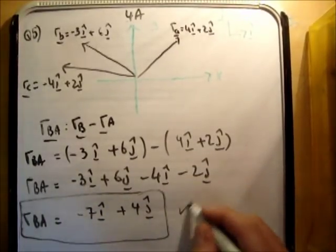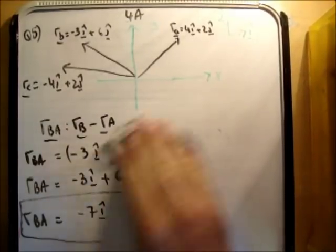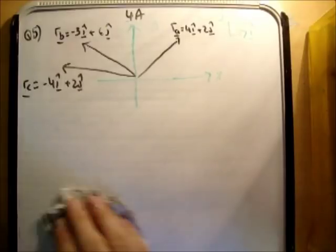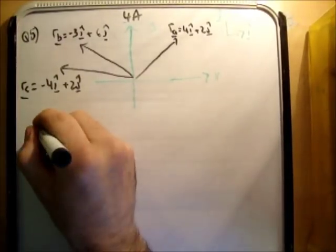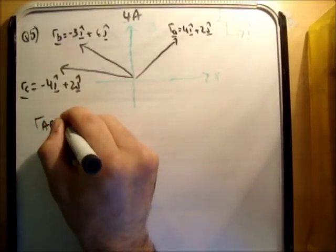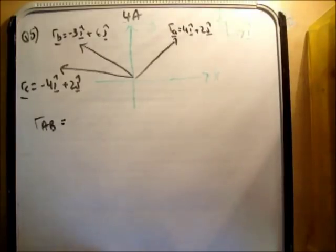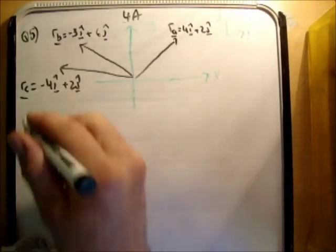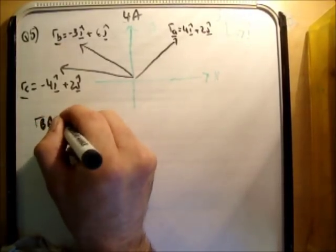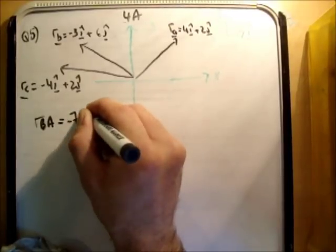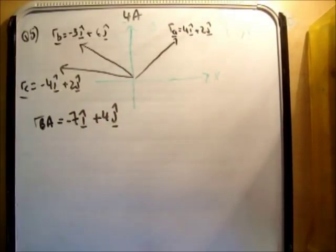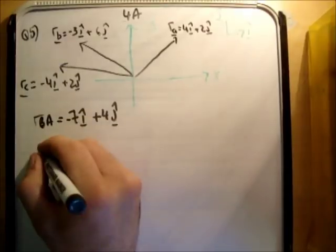All right, and that is correct. Now, what else do we have to get? And we're going to also get R C A. All right, so I'm just going to rub this out here. And notice, so we're going to get, we had R A B. Is it R A B or R B A? It was R B A, in fact. And that was equal to negative 7i hat plus 4j hat. So the next vector I'm going to get is R C A.